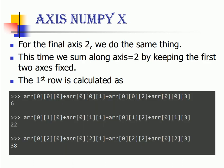For the final axis which is axis equal to 2 we do the same thing that we have done so far. This time we sum along axis equal to 2 by keeping the first two axes fixed. If your intuition is clear enough now you would realize that the final output when you apply axis equal to 2 in our case would result in an array whose shape would be 2 rows and 3 columns.